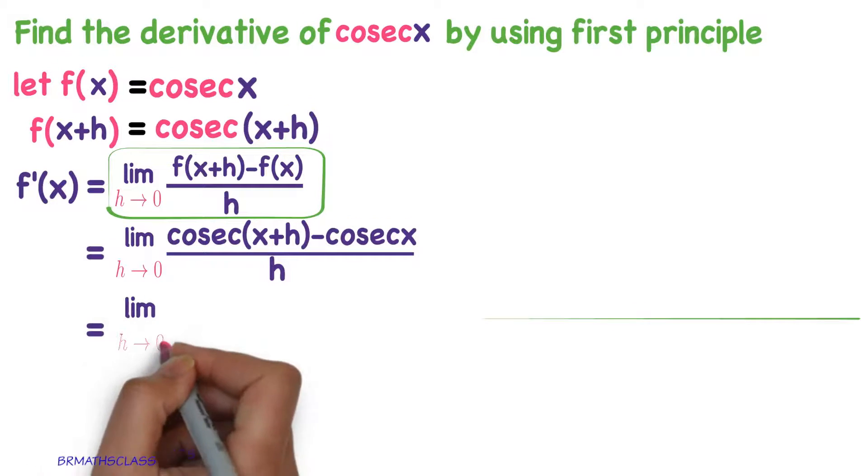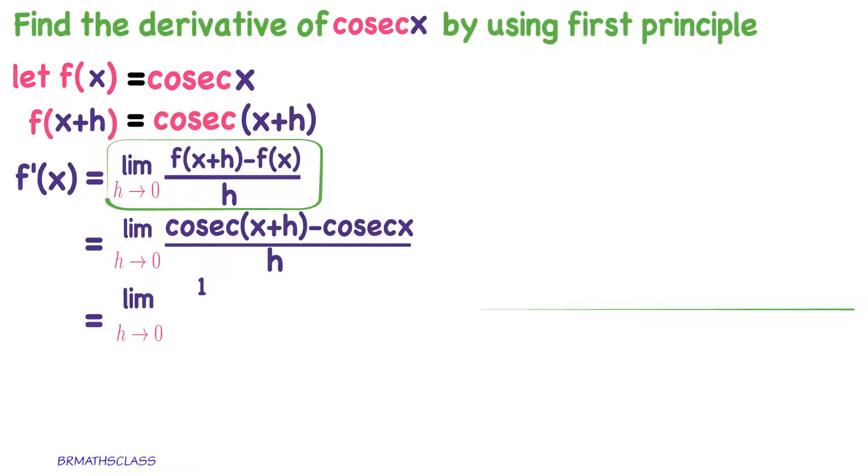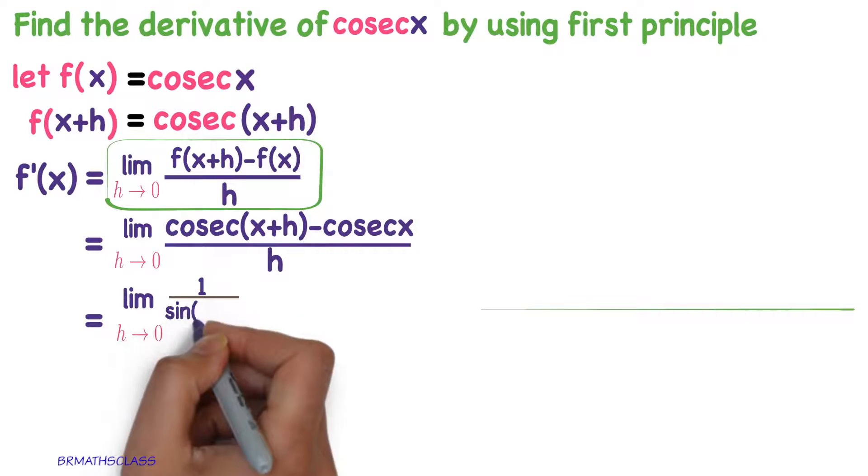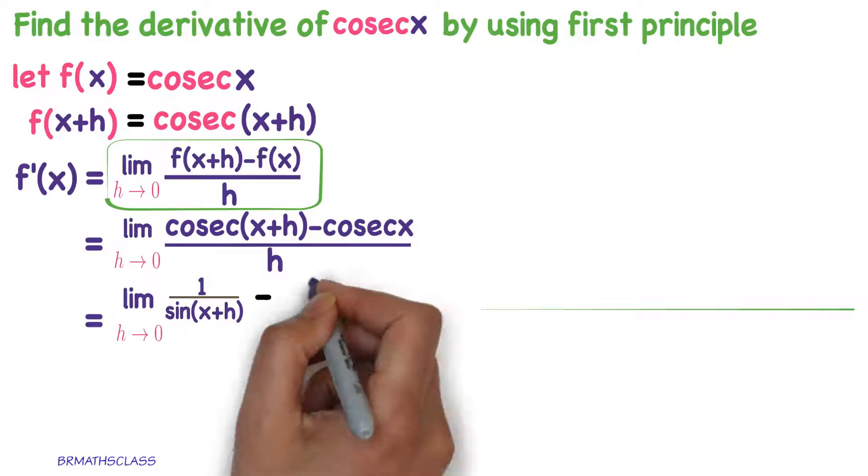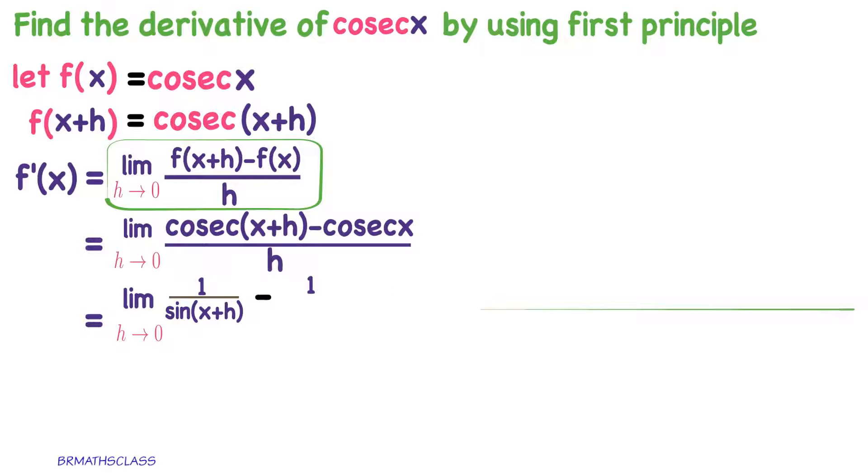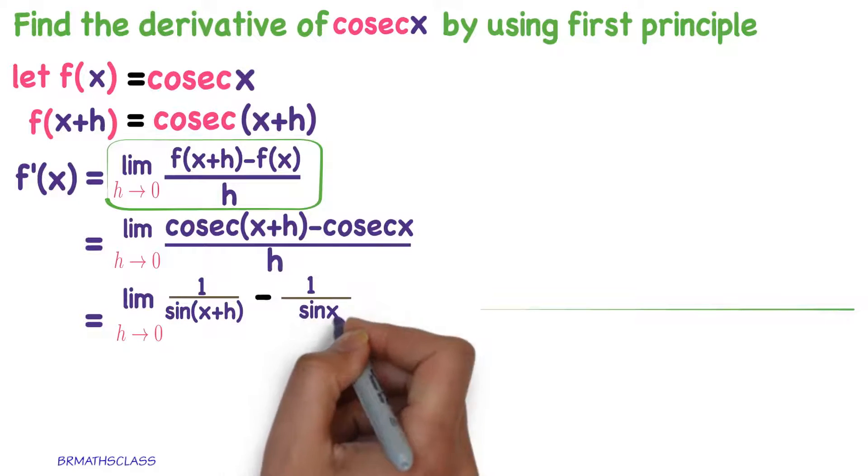Limit h tends to 0, cosecant x plus h can be written as 1 divided by sin of x plus h minus cosecant x can be written as 1 divided by sin x, whole divided by h.